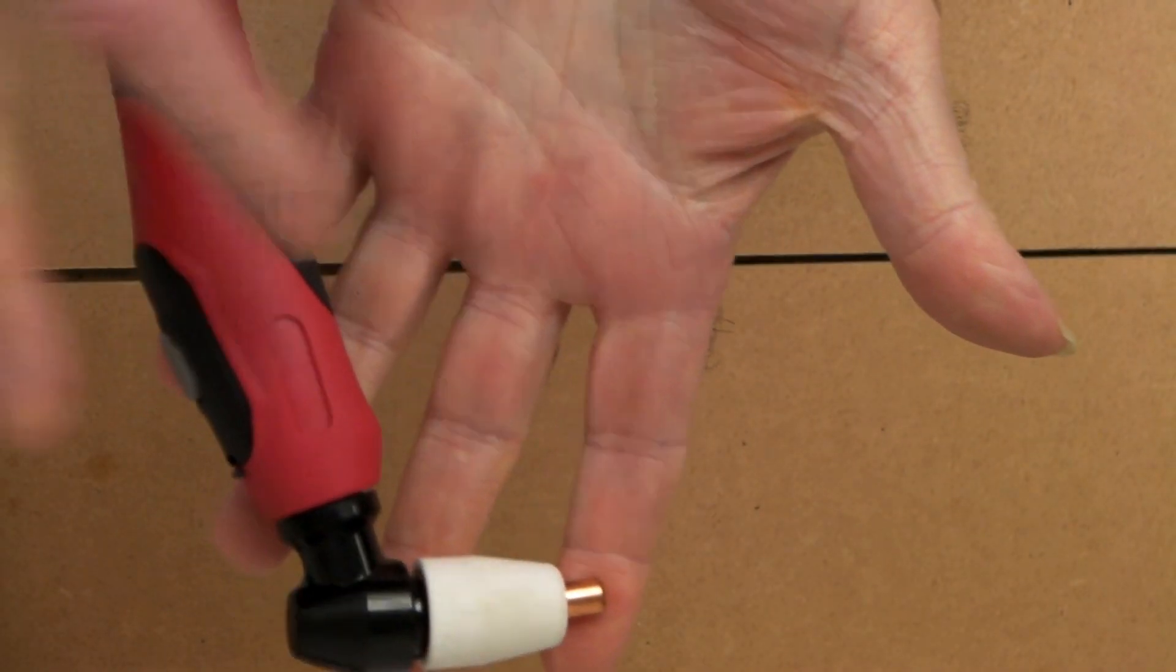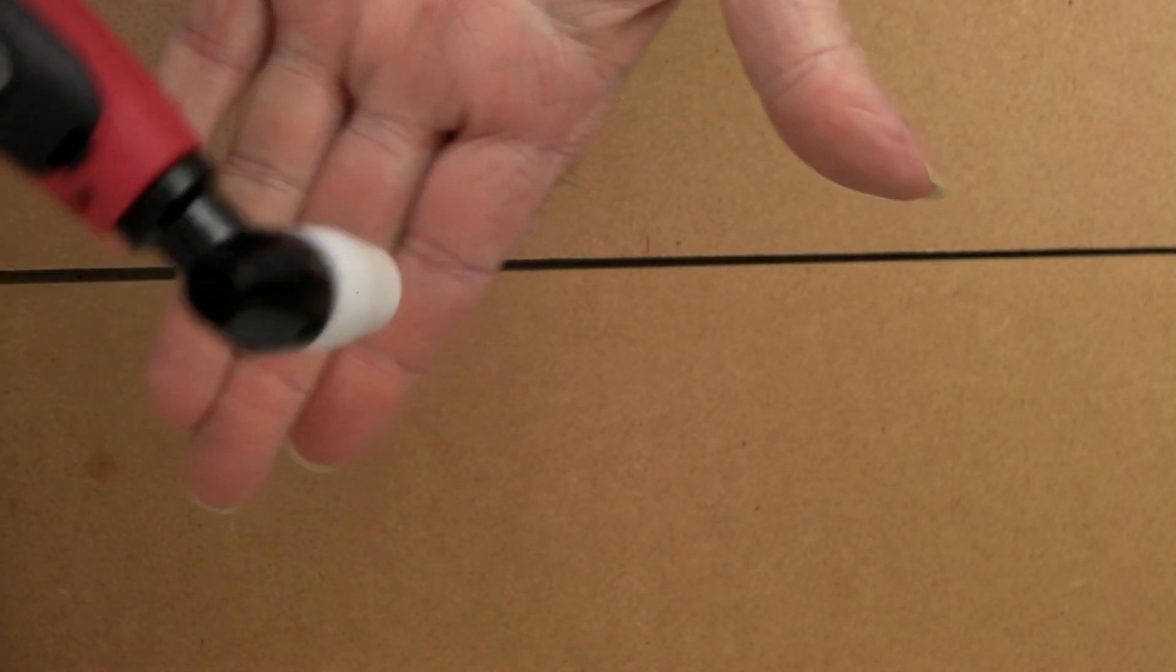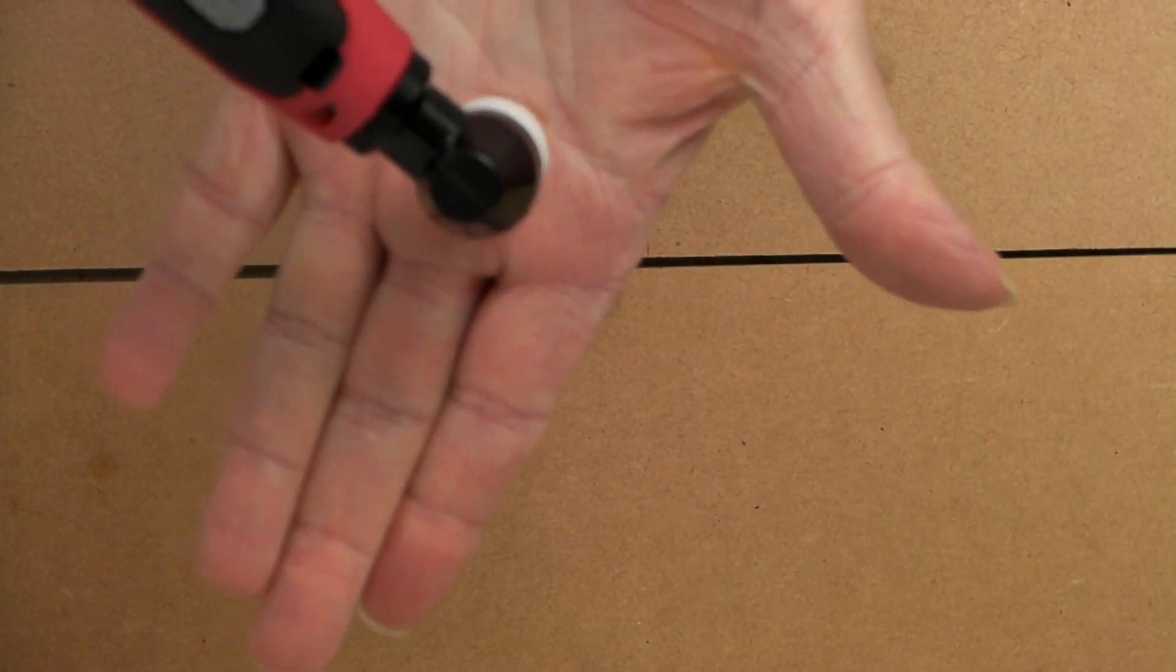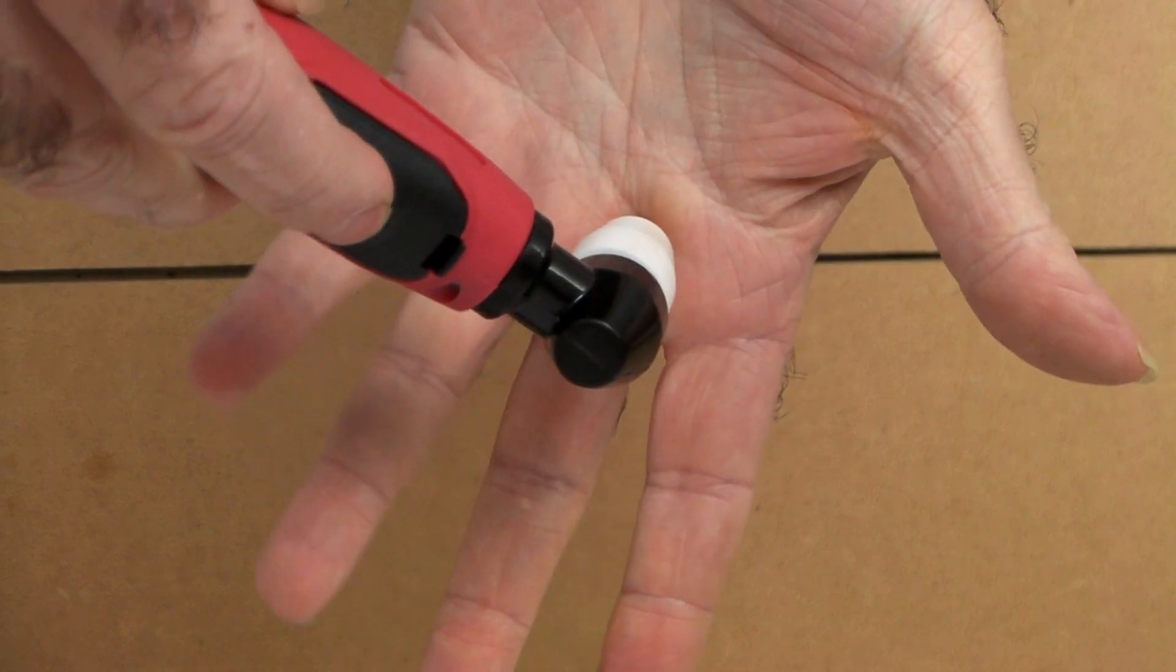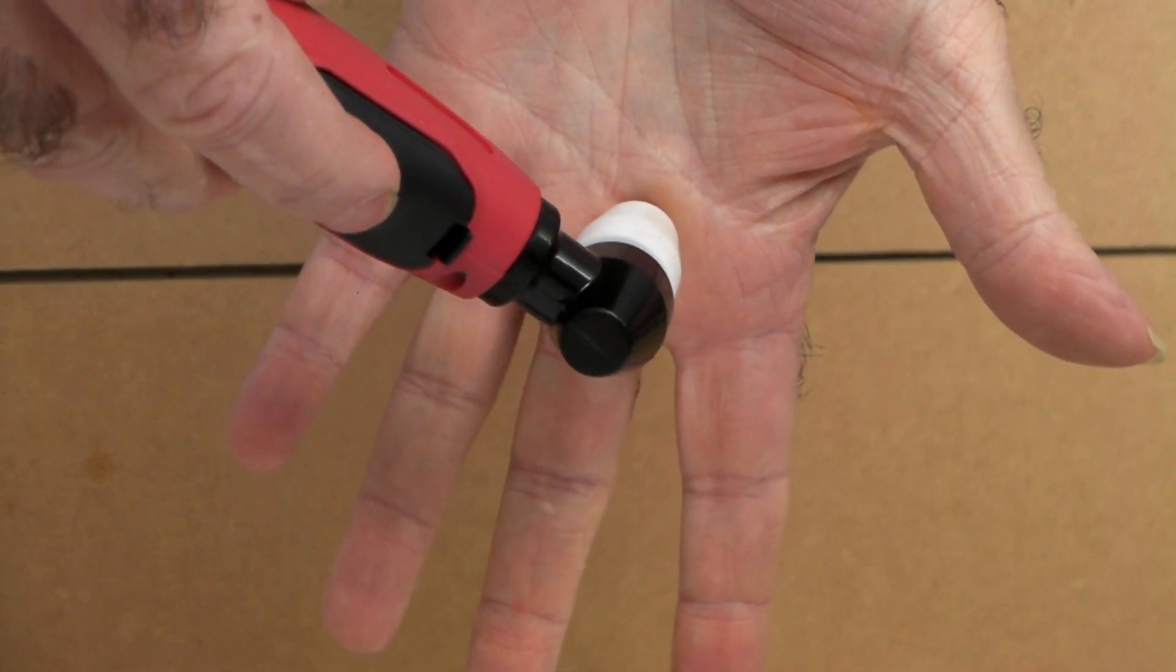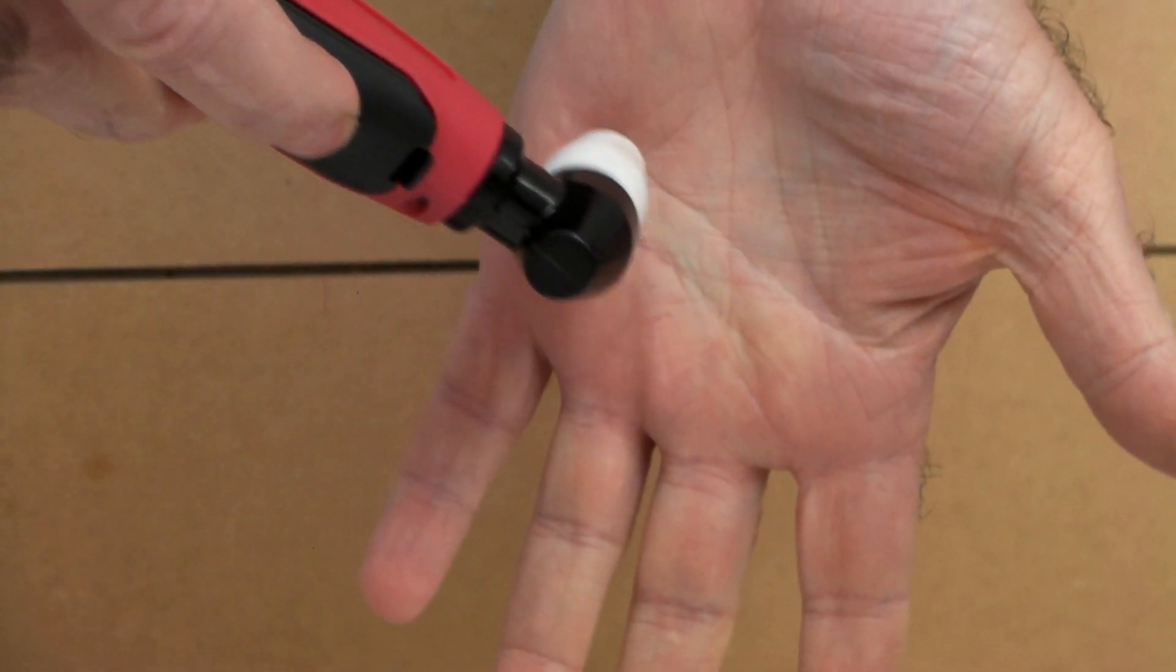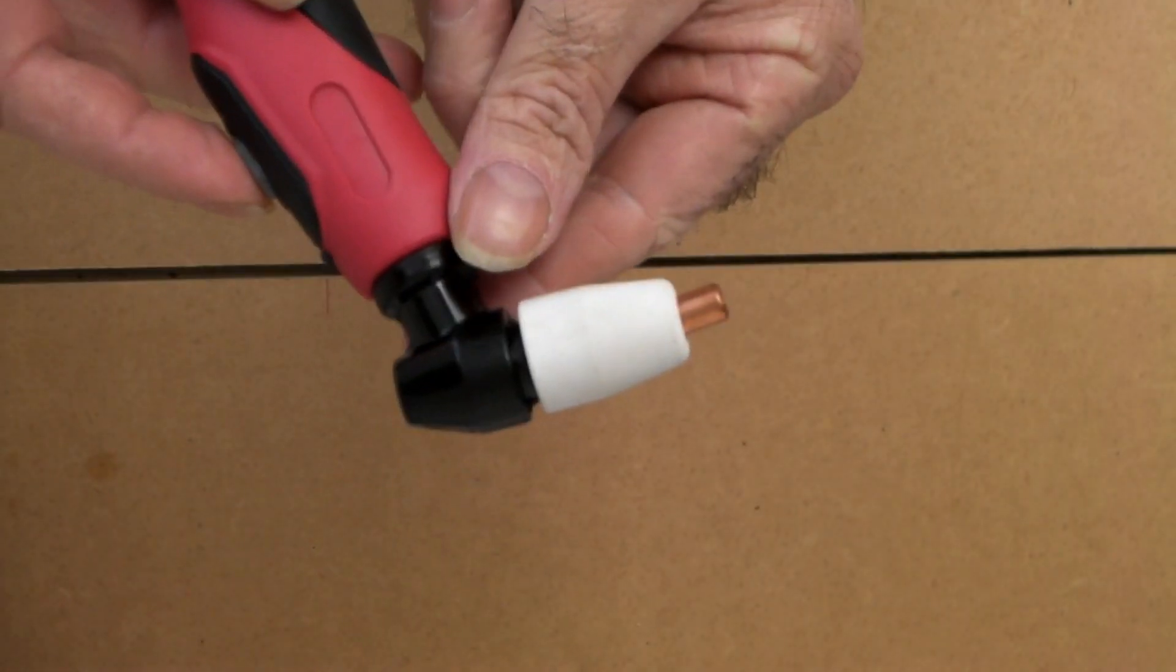So if you drill a hole in whatever you're cutting first and then put your cutter on top of it and push the start button, you've got no blow back and it'll make your tips last two to three hundred percent longer.